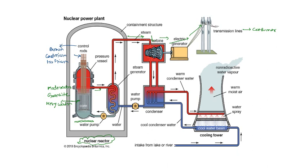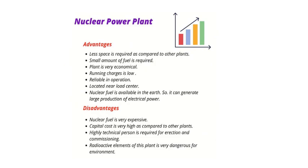This is the main working of nuclear power plants. The main advantages of nuclear power plants are: less space is required as compared to other power plants; a small amount of fuel is required — as we have seen, one ton of uranium is equivalent to 2500 tons of coal; the plant is economical; and running charges are low.